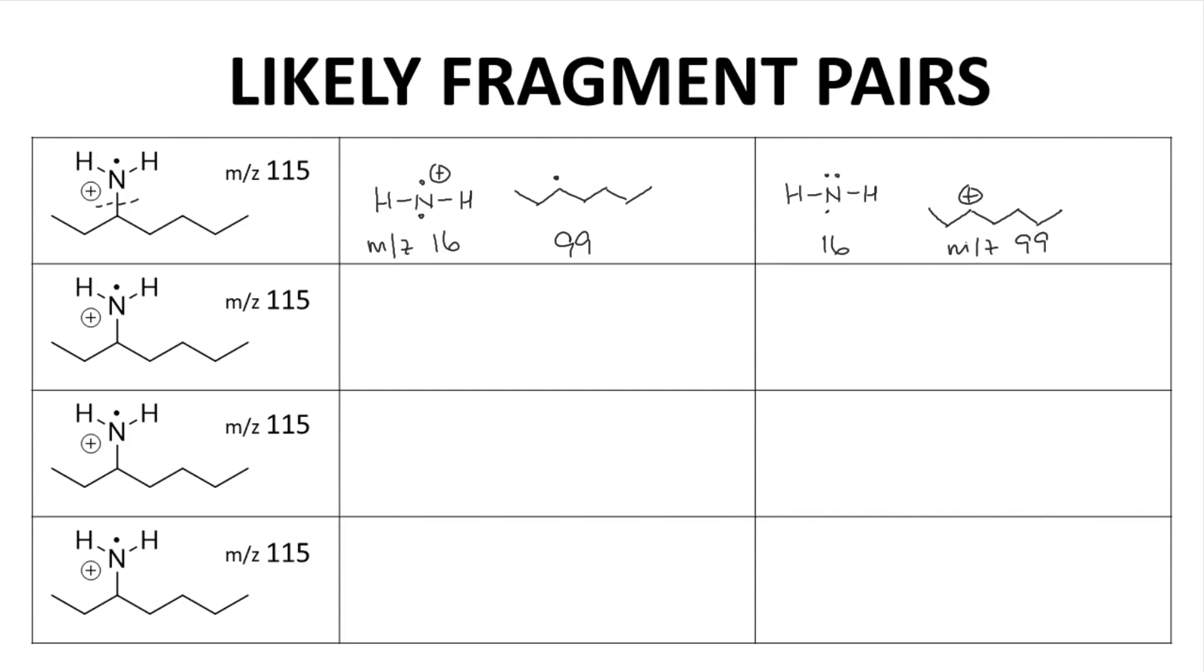So for bond B, we could break this to give a neutral radical, unobserved, that has a mass of 29, as well as this cation which has an Mz of 86. And of course we're going to observe the cation.